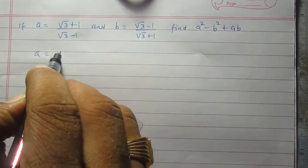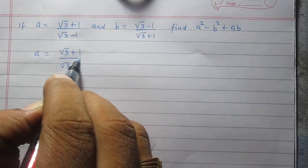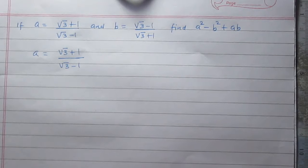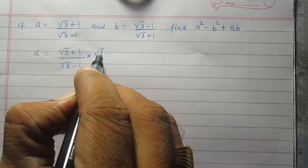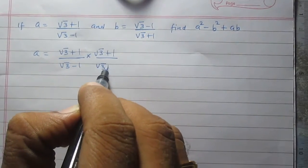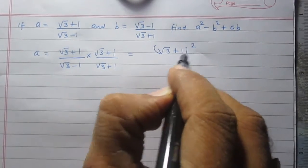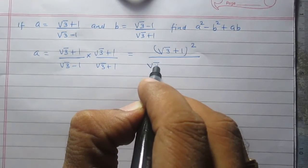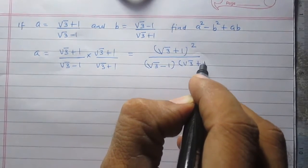Let us consider a — it is square root of 3 plus 1 upon square root of 3 minus 1. It is a fraction with its denominator irrational, and we are to rationalize this fraction by multiplying its numerator and denominator both by square root of 3 plus 1. So we will get the numerator as square root of 3 plus 1 whole square, and the denominator is the multiplication of square root of 3 minus 1 and square root of 3 plus 1.